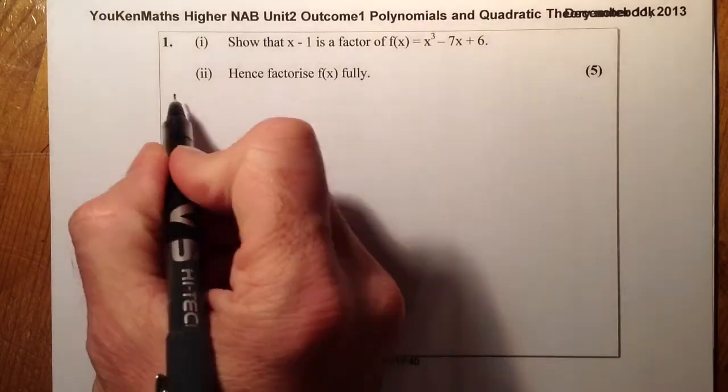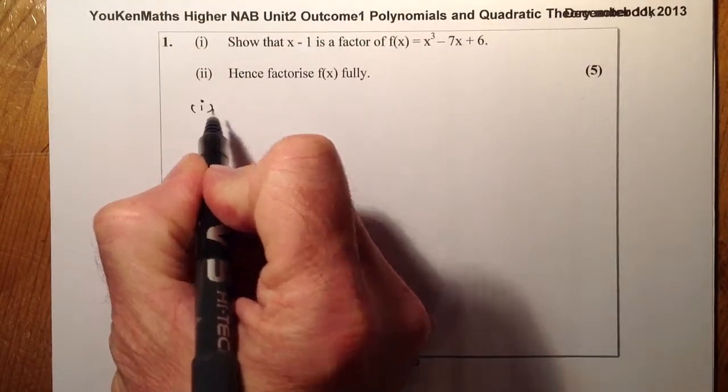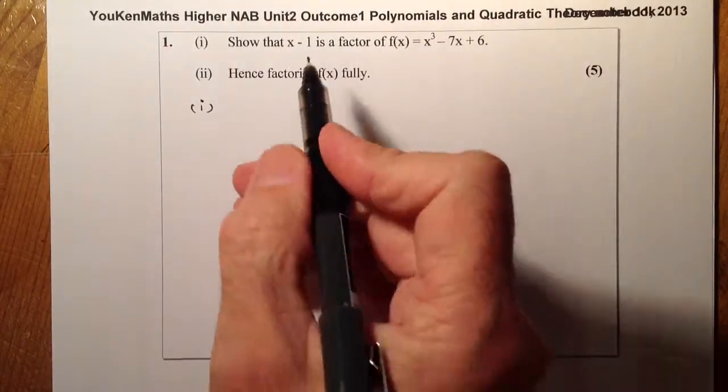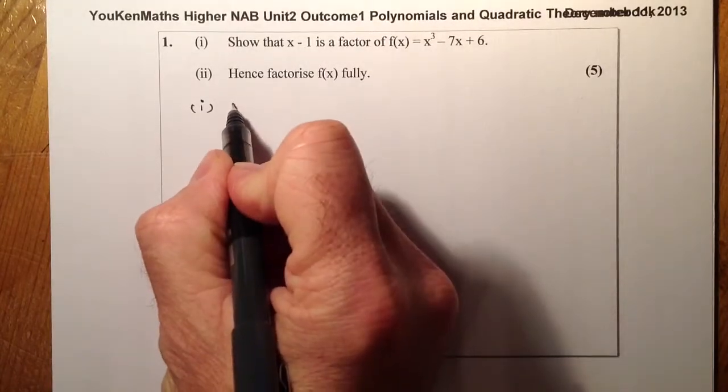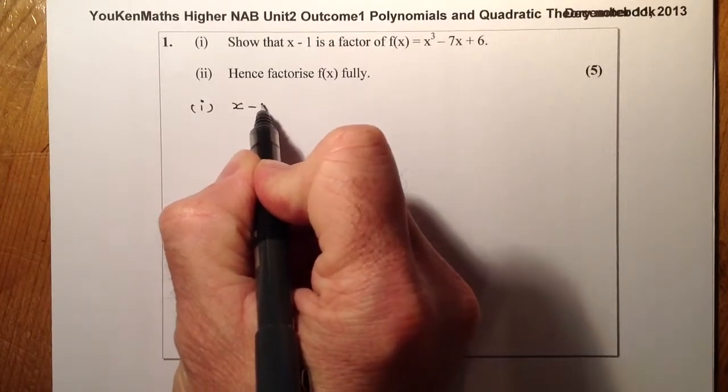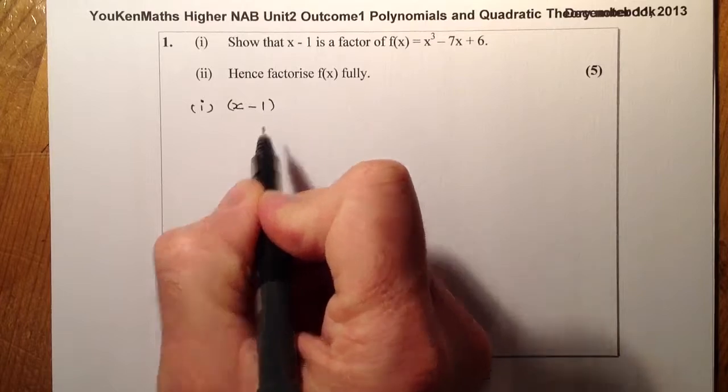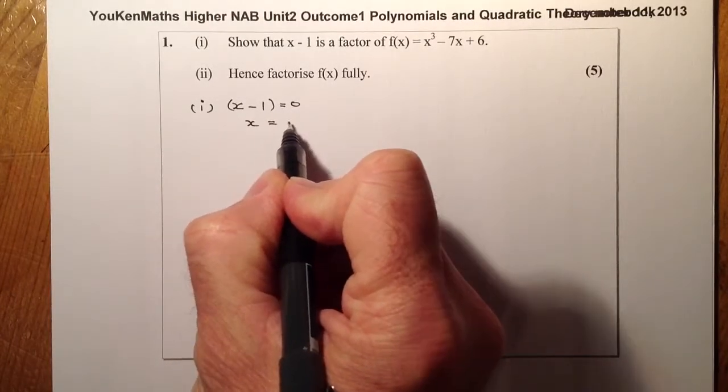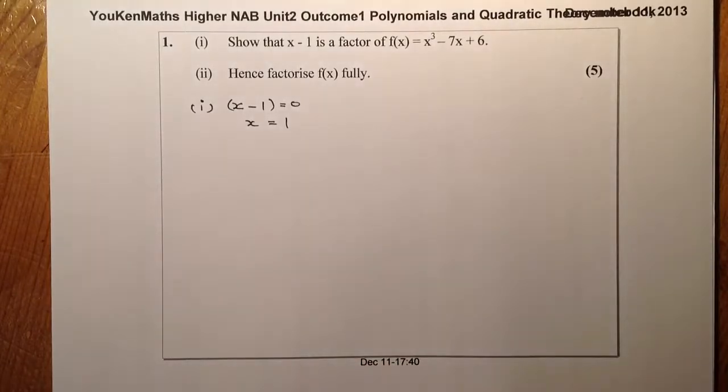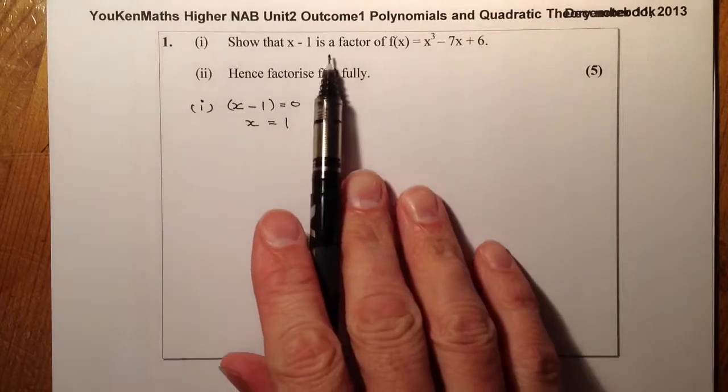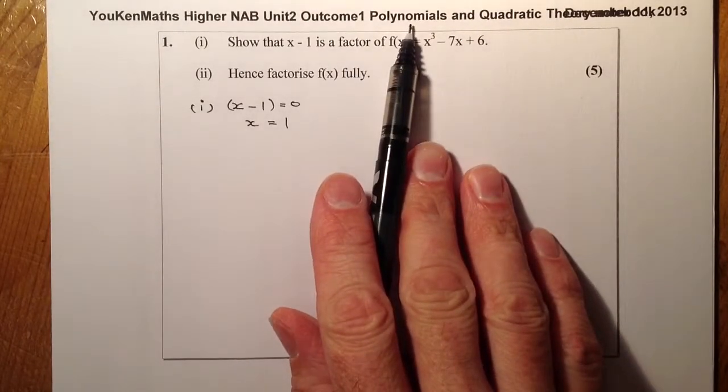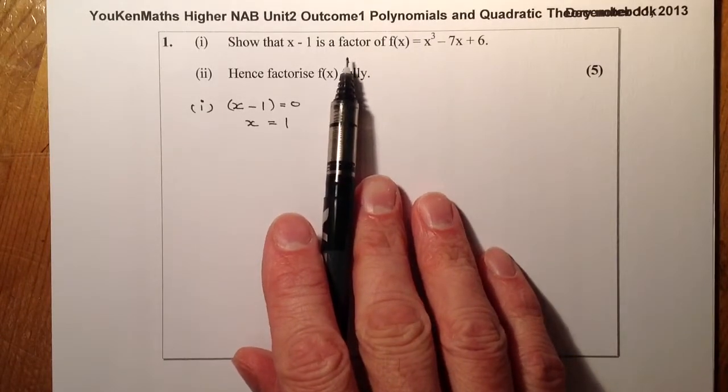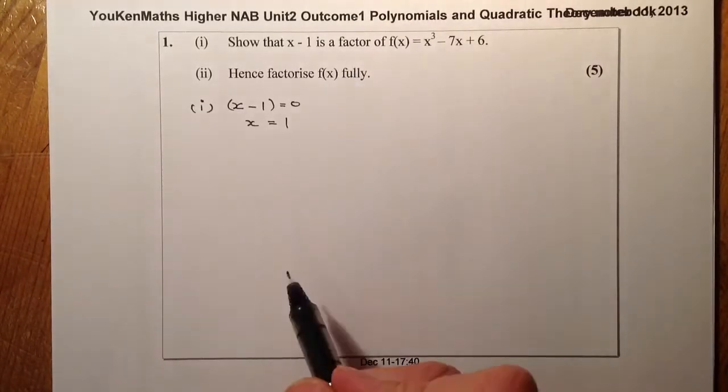So first question, we've got show that x minus 1 is a factor of f(x) equals x cubed minus 7x plus 6. Then we're going to factorize it fully in part two, out of five marks. For part one, I'm going to show that this is a factor. Remember, a factor would be like that equals zero. So what I'm going to be looking at is a root of x equals 1. I know it's a polynomial question, and I'm going to use synthetic division to work out my answer.